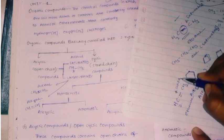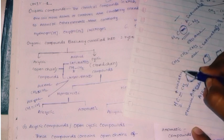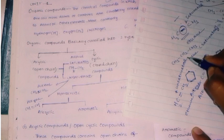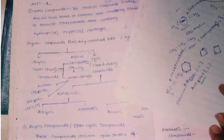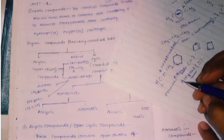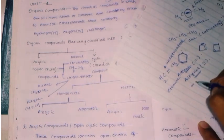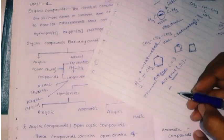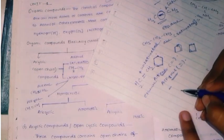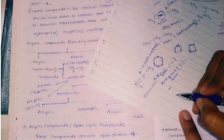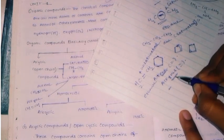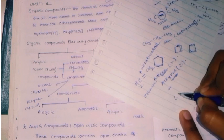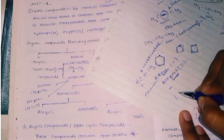If there are two double bonds, the compound is unsaturated. Next, we need to identify all kinds of unsaturated compounds.